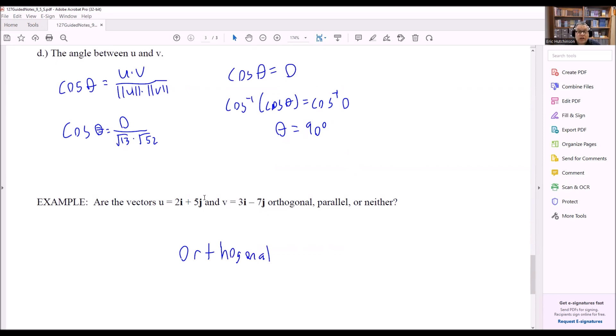If we were to do this whole problem, and we would have gotten something that's not 0, 180, or 90, maybe we would have gotten like 157 degrees, for instance, maybe something like that, then we would actually circle neither for this one. So because it's exactly 90, though, we can say that it is orthogonal.